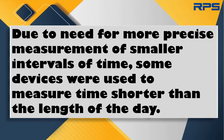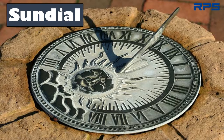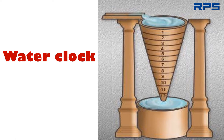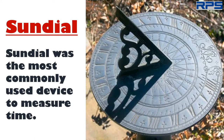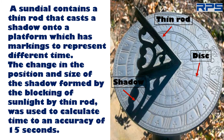Due to the need for more precise measurements of smaller intervals of time, some devices were used to measure time shorter than the length of the day. Some such devices are the sundial, water clock, and sand clock. Out of these, the sundial was the most commonly used device. A sundial contains a thin rod that casts a shadow onto a platform which has markings to represent different times. The change in the position and size of the shadow, formed by the blocking of sunlight by the thin rod, was used to calculate time to an accuracy of 15 seconds.